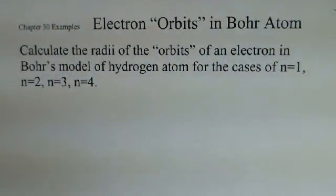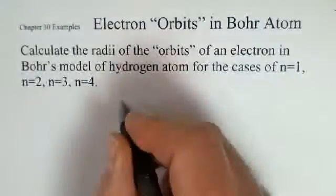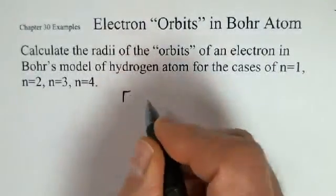And again, this is real basic, real quick, but the concept is worth a video. So Bohr came up with the calculation for the radii of the electron orbits.